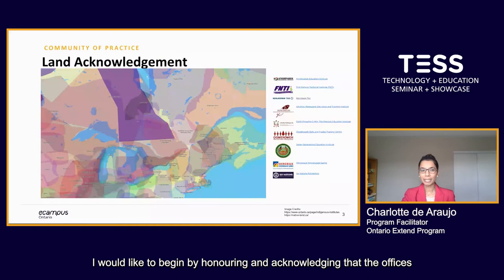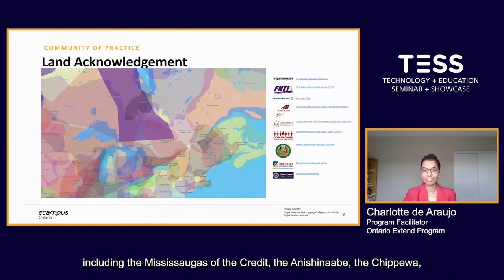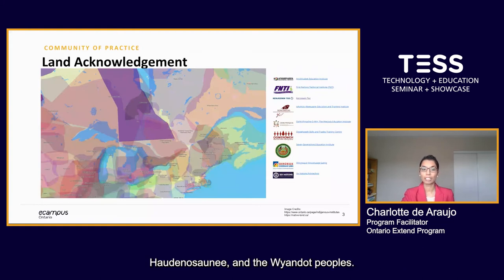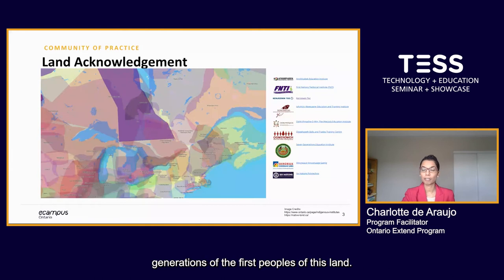I would like to begin by honoring and acknowledging that the offices of eCampus Ontario are located on the traditional territory of many nations, including the Mississaugas of the Credit, the Anishinaabe, the Chippewa, Haudenosaunee, and the Wendat peoples. I recognize and am grateful for the legacy of all past, present, and future generations of the First Peoples of this land.